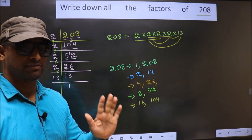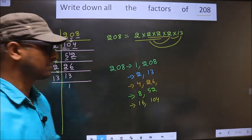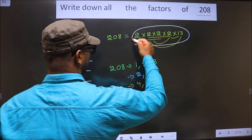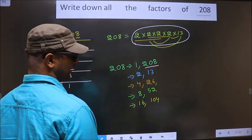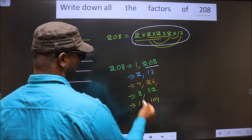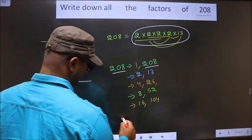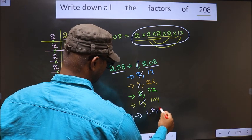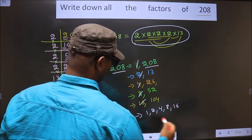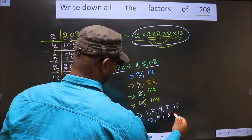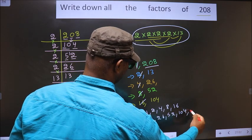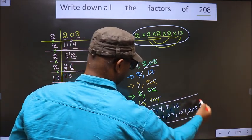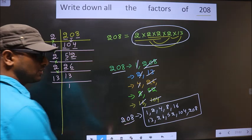Now we should take a combination of 5 numbers. Here we have only 5 numbers, so if we take all 5 numbers we get 208. Thus these are all the factors of 208: 1, 2, 4, 8, 16, 13, 26, 52, 104, and 208.